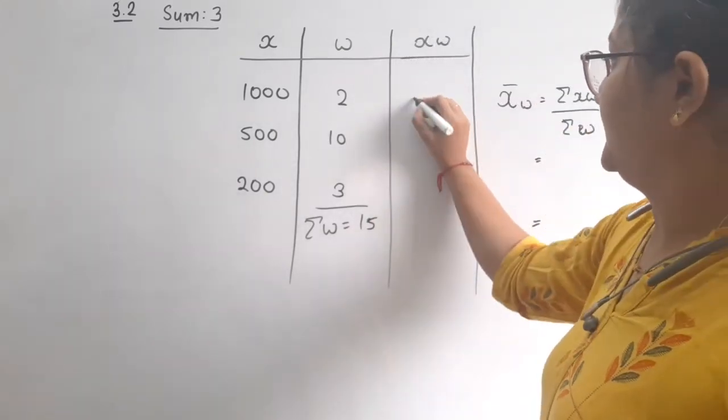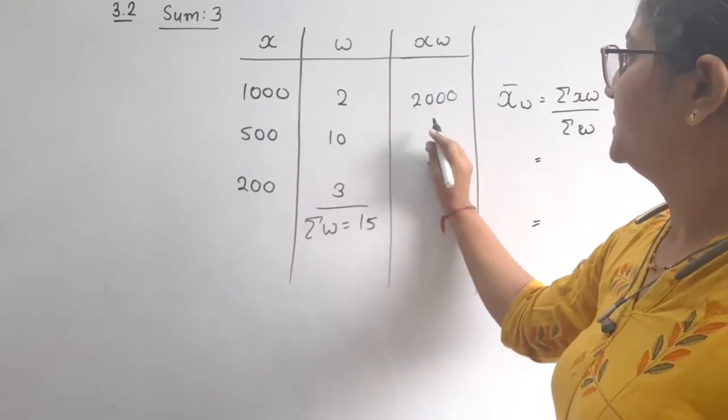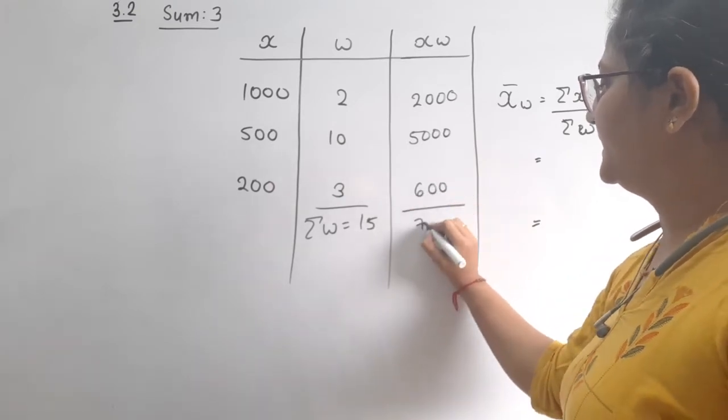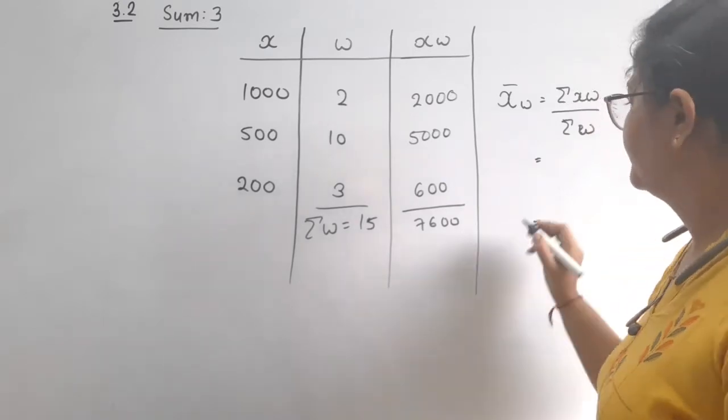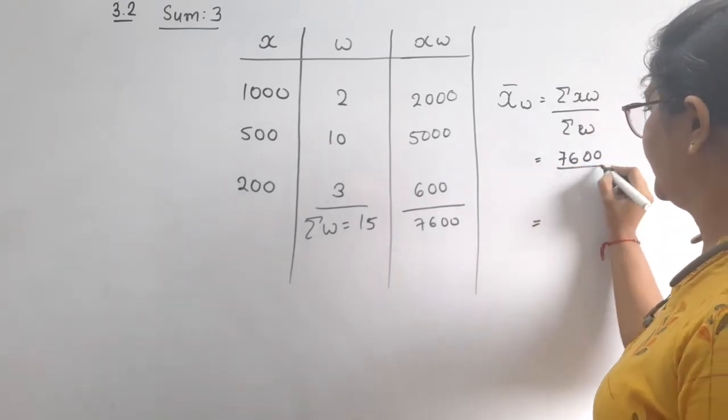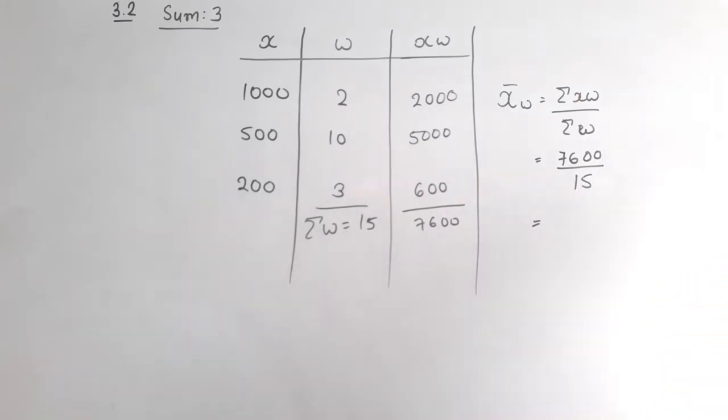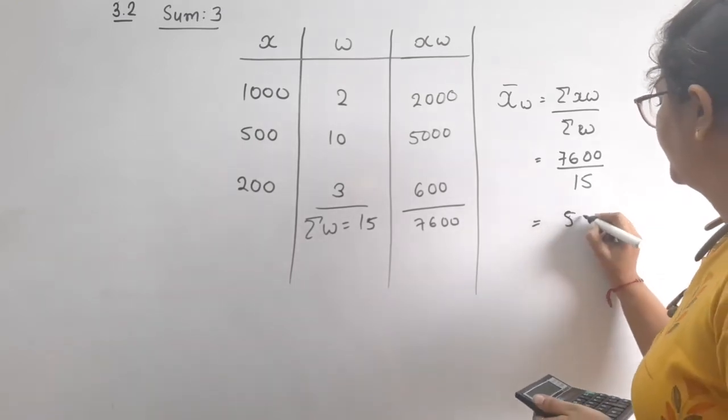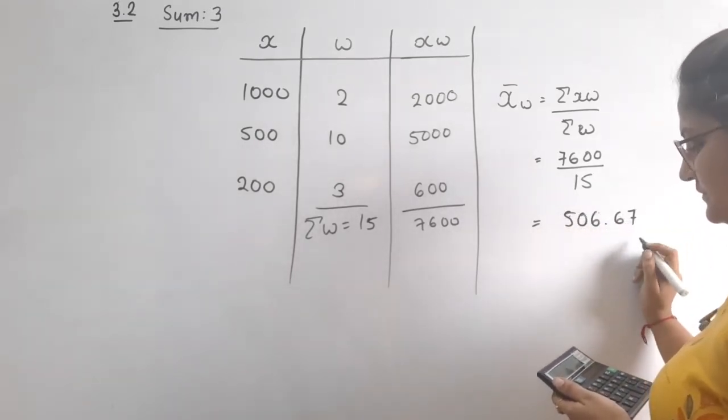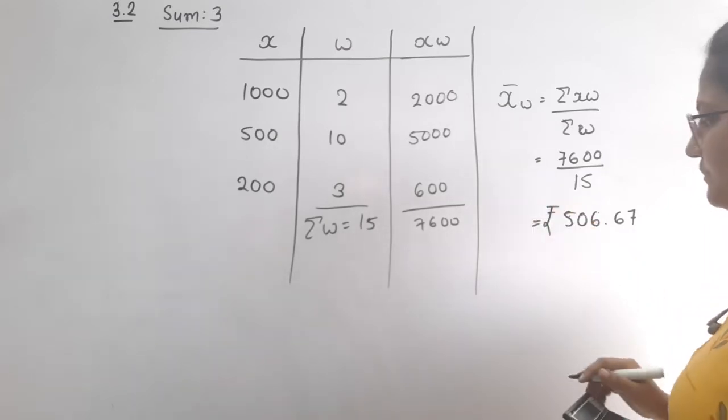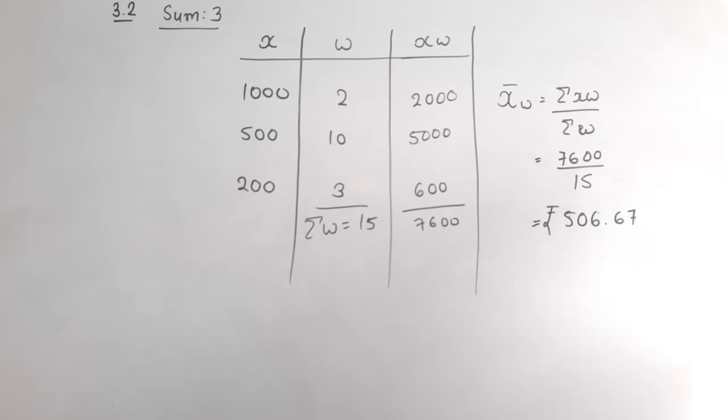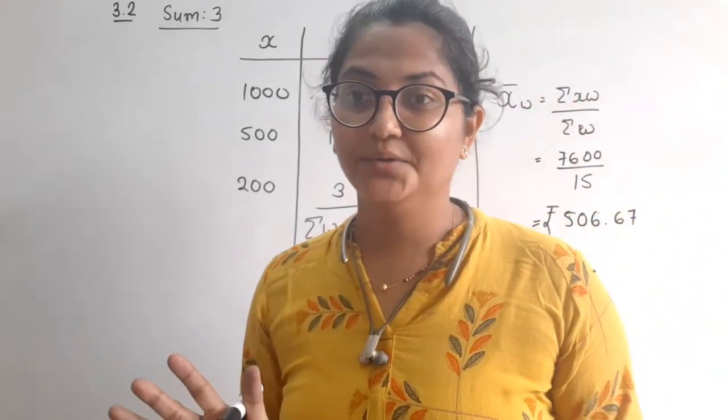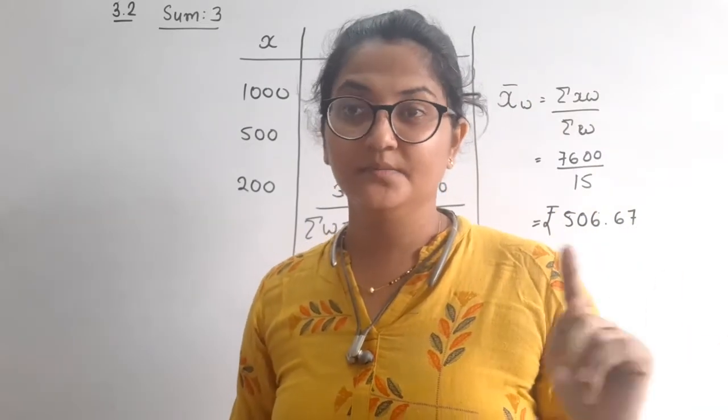Sigma W equals 15. Do the multiplication: 3000, 5600, 600. Total is 7600 divided by 15. The answer is 506.67. We're talking about money here. Clear? Very good.